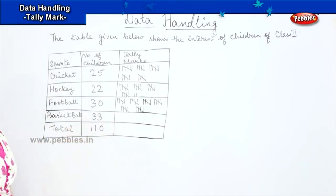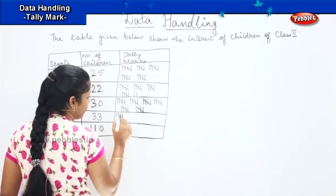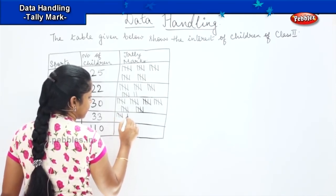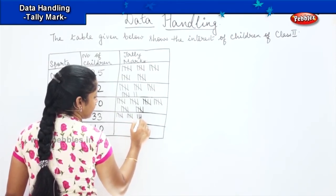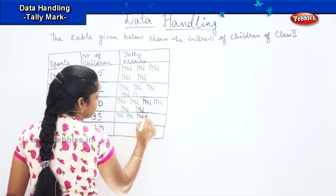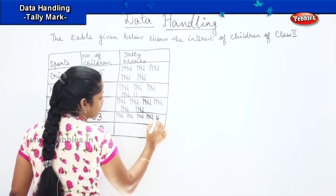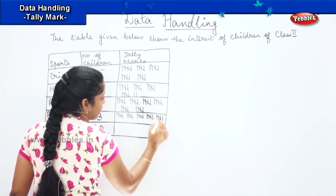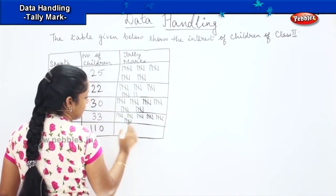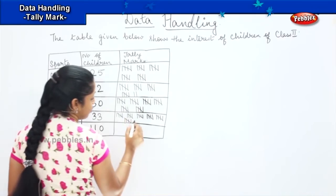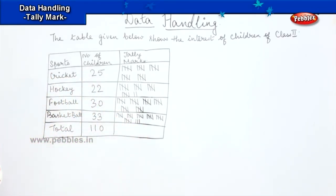The next one says 33 for basketball. 1, 2, 3, 4, slanting 5, 6, 7, 8, 9, slanting 10, 11, 12, 13, 14, slanting 15, 16, 17, 18, 19, slanting 20, 21, 22, 23, 24, slanting 25, 26, 27, 28, 29, 30. Then we have 31, 32, 33. So we have done the first step which is drawing the tally marks.